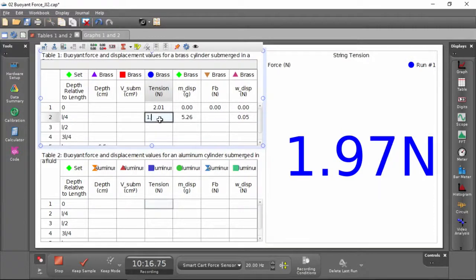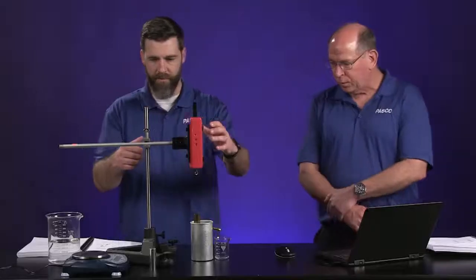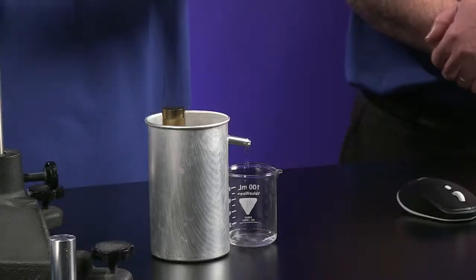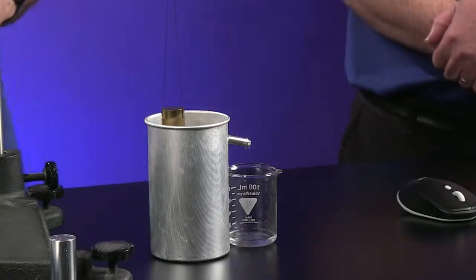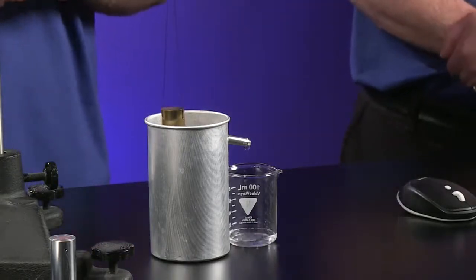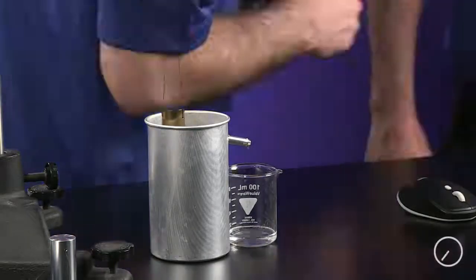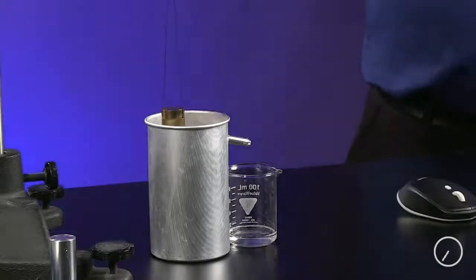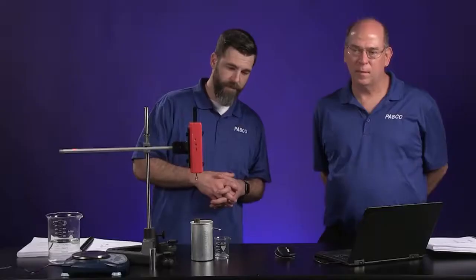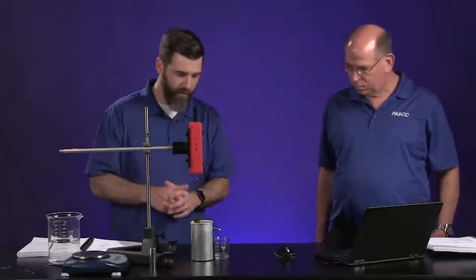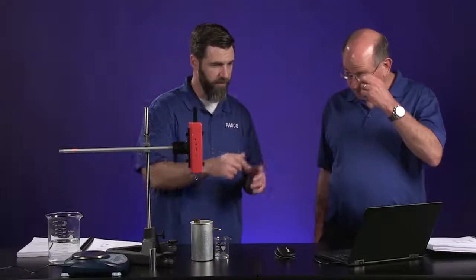Now we're ready for submerging it halfway. So loosen that. There's halfway. And the dripping commences again. The dripping has slowed quite a bit. We'll maybe wait for one more drop and then make our mass measurement real quick and record our tension value.